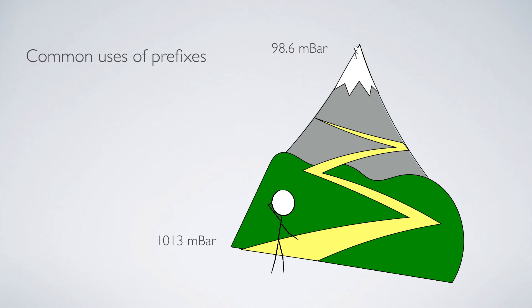So, here I have a guy at the bottom of the mountain with an atmospheric pressure of about 1,013 millibar. That just happens to be the day's value. And at the top of the mountain, the atmospheric pressure is a lot less, just 98.6 millibar.